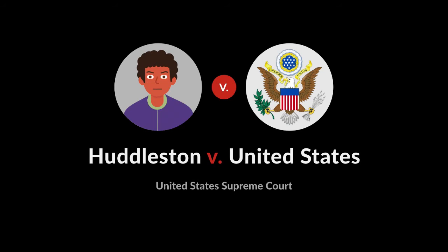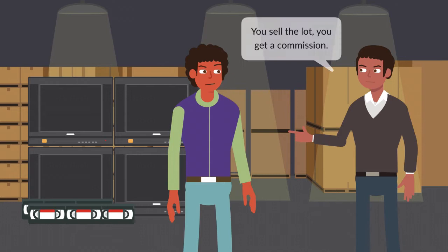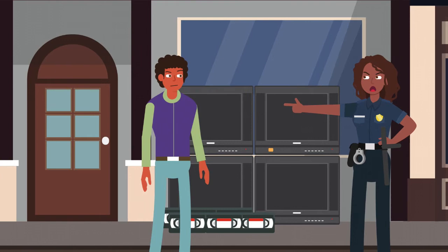On multiple occasions, Guy Huddleston took possession of wholesale lots of electronics and related equipment from Leroy Wesby and arranged to sell them on a commission basis. Huddleston sold the lots well below their market value.